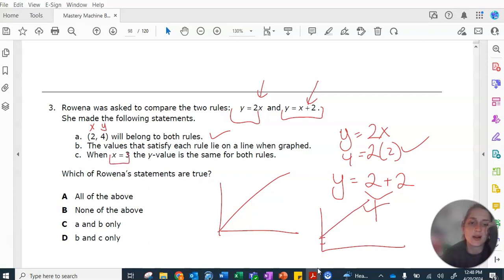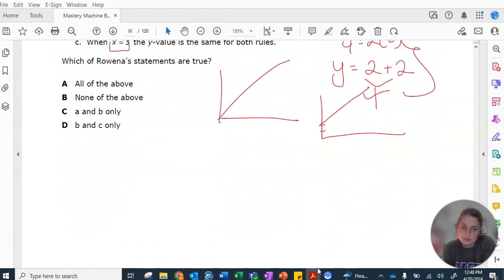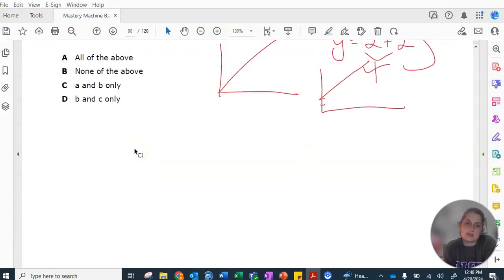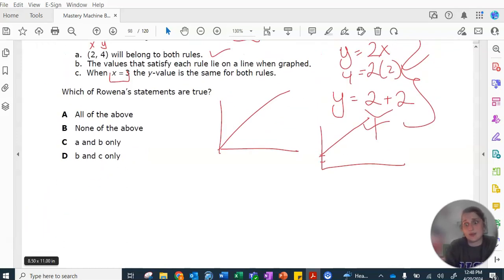When x equals 3, the y value is the same for both rules. Now you want to do exactly what I just did and test. Instead of saying 2 times 2, you're going to say 2 times 3, and 3 plus 2. See if they equal the same thing, and then you can make your decision. That was it, because the first one took up so much space. Now we're done with our homework.